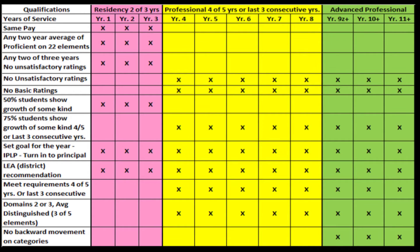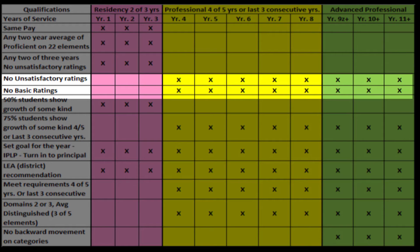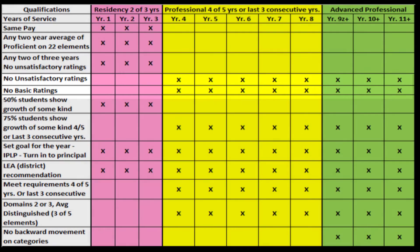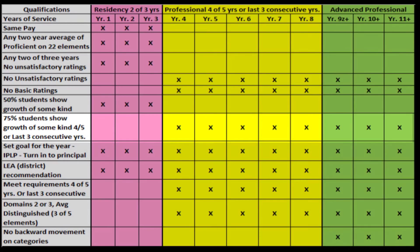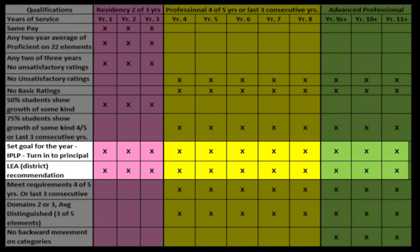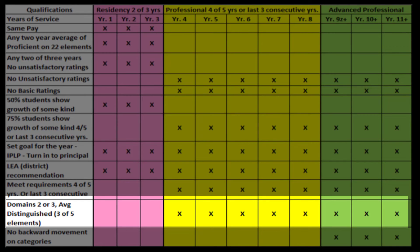After this five-year period, if the teacher has qualified for four of the five years or the last three years consecutively, they move on to the advanced professional level. Here they can qualify by not having any unsatisfactory ratings on the Danielson Model, and they must also have no basic ratings on the model. Again, 75% of the students must show some kind of growth during the year. The teacher must also have a goal for the year, and the district must again recommend the teacher for successful completion of another year. As in the professional level, the teacher must average a distinguished rating in either Domain 2 or Domain 3 of the Danielson Model.